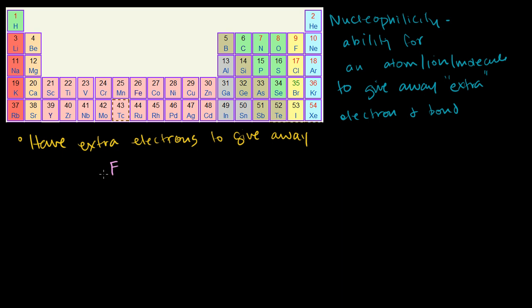Normally fluorine has seven valence electrons, but it's so electronegative it might be able to swipe off another electron from something else and then becomes the fluoride anion with a negative charge. You could do that for all of the halides — chlorine can become chloride, bromine can be bromide, iodine can be iodide.